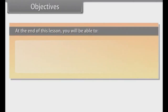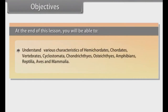At the end of this lesson, you will be able to understand various characteristics of Hemichordates, Chordates, Vertebrates, Cyclostomata, Chondrichthyes, Osteichthyes, Amphibians, Reptilia, Aves and Mammalia.